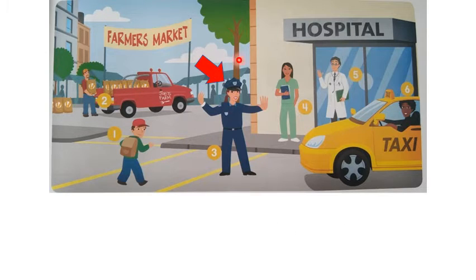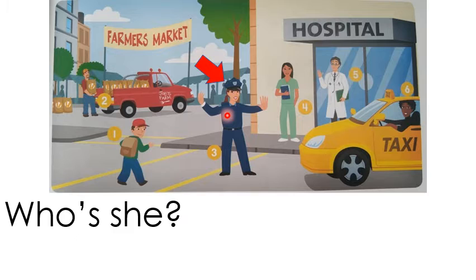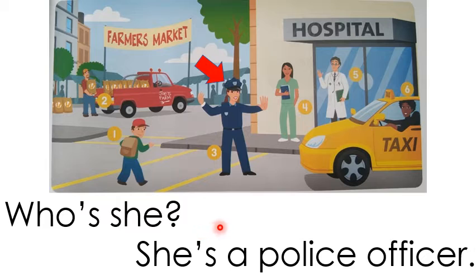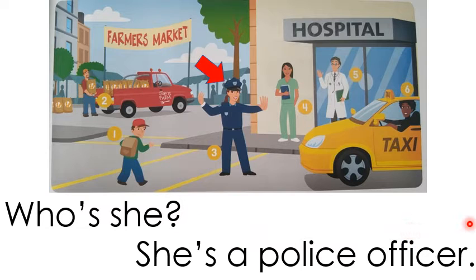What do we say for her? Do we say 'who's he' or 'who's she'? We say 'who's she.' Good. Who's she? She's a police officer. She's a police officer. Your turn. Good.